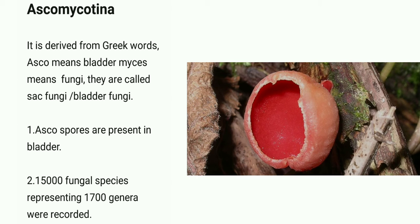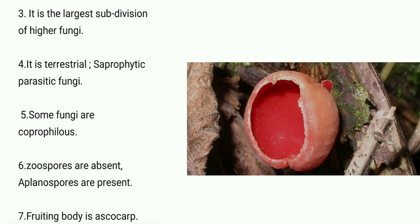The spores are present in the bladder. 15,000 fungal species representing 1,700 genera were recorded worldwide, and it is the largest subdivision of the higher fungi. They are terrestrial, saprophytic, and parasitic fungi. Terrestrial means they live on land; saprophytic means they depend on dead organisms; and parasitic means they depend on living organisms for food.